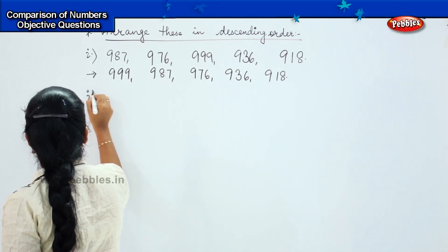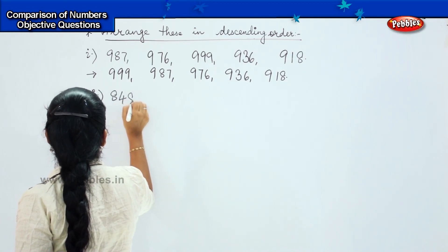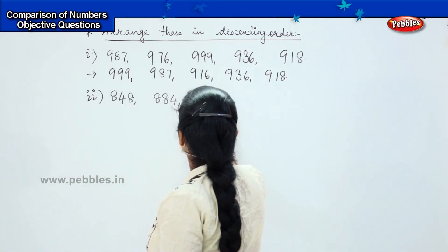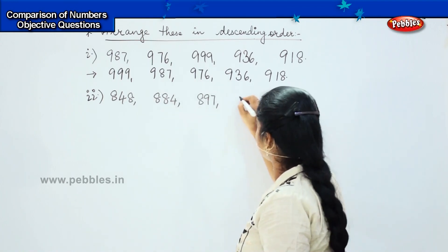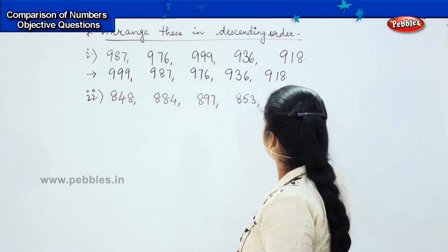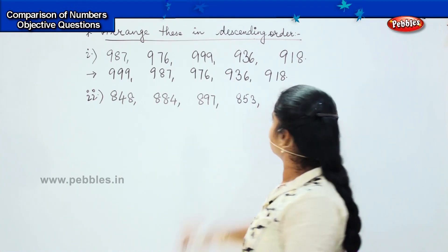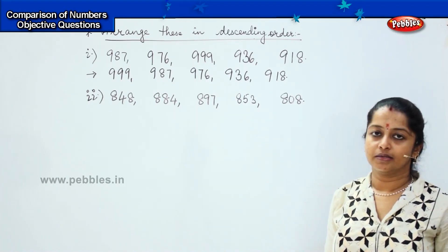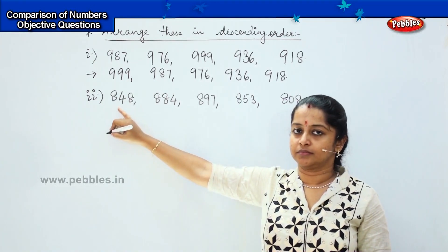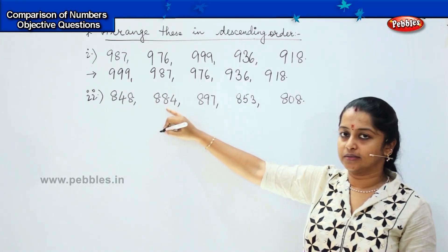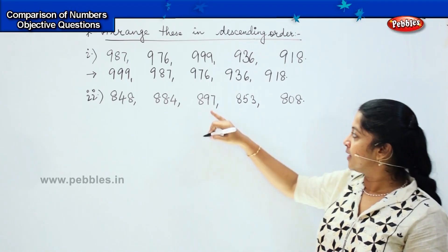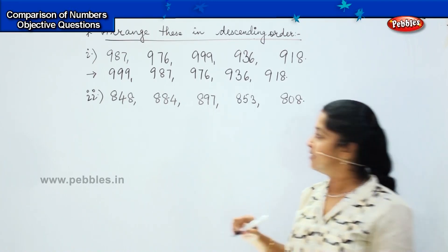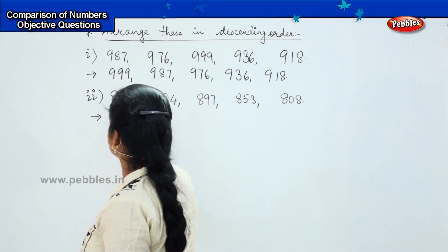Here is my next question: 848, 884, 897, 853, and 808. Tell me which is the largest number in this given lot. Is it the first one? No. Is it the second one? No. Is it the third one? Yes — 897 is the largest. So my answer starts with 897.